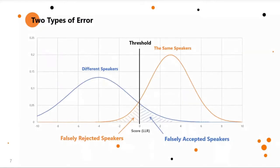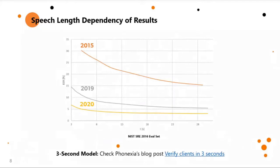If we set the threshold so that both kinds of errors are equal, we speak of the equal error rate — a single value sometimes used for presenting results. Results also depend on the length of evidence: with longer recordings you can get better results. Over the years, new systems have been developed and there has been huge progress.